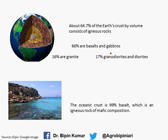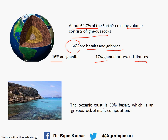About 64% of the earth's crust by volume is igneous rocks. Of that, 66% are basalt and gabbro, 16% are granite, and 70% are granodiorites or diorites. If we talk about the oceanic crust, 99% of the oceanic earth's crust is made of basalt, which is an igneous rock of mafic composition.